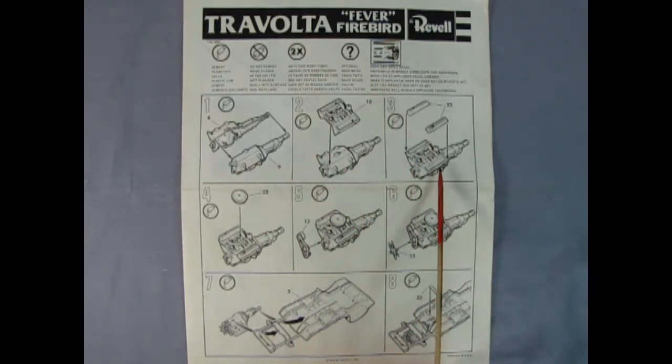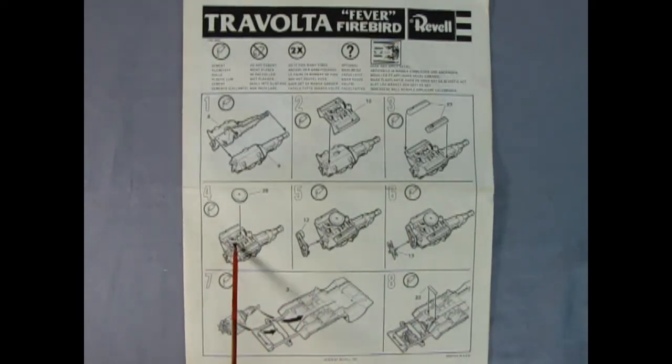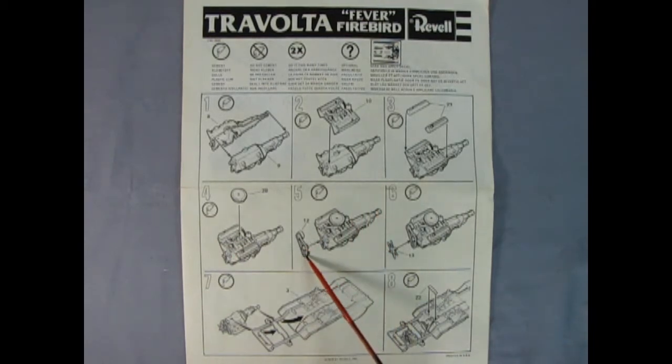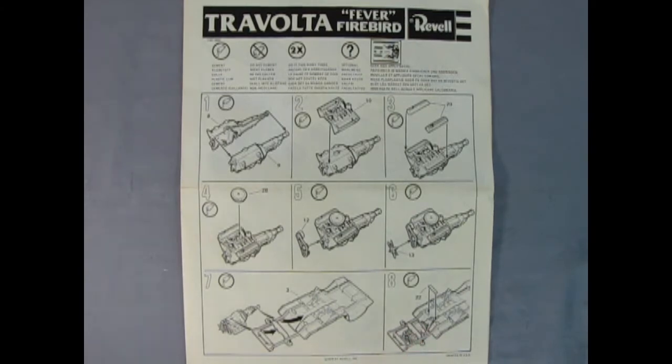Then here we have our chrome valve covers dropping in place. We've got our chrome air cleaner dropping on top of our carburetor. And then here we've got our fan belts, pulleys, and alternator with the fan popping in place. The entire engine pops up into the chassis from below and then there's a brace that goes over the rear of the transmission.